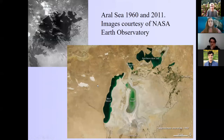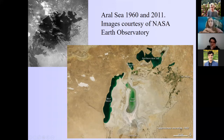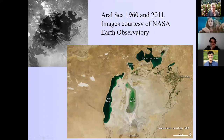Here is the Aral Sea in 1960 from an early satellite image on the upper left, and then in 2011. You can see the saline lake covered this entire region historically. To give a sense of scale, that scale bar is 50 kilometers — about 30 miles — so it was hundreds of miles across. It's a huge lake and it's mostly gone now, used up for irrigation.